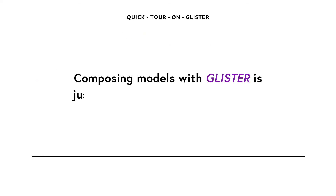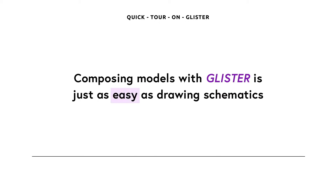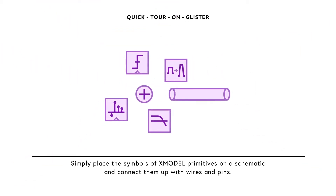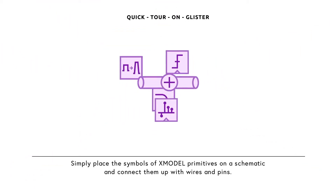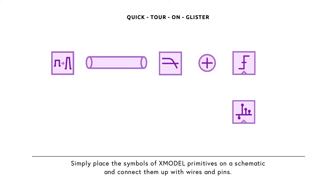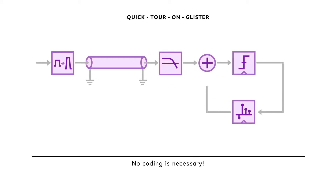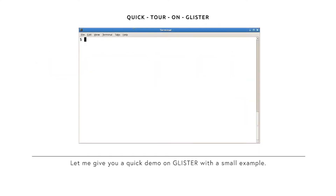Composing models with Glister is just as easy as drawing schematics. Simply place the symbols of X-model primitives on a schematic and connect them up with wires and pins. No coding is necessary.